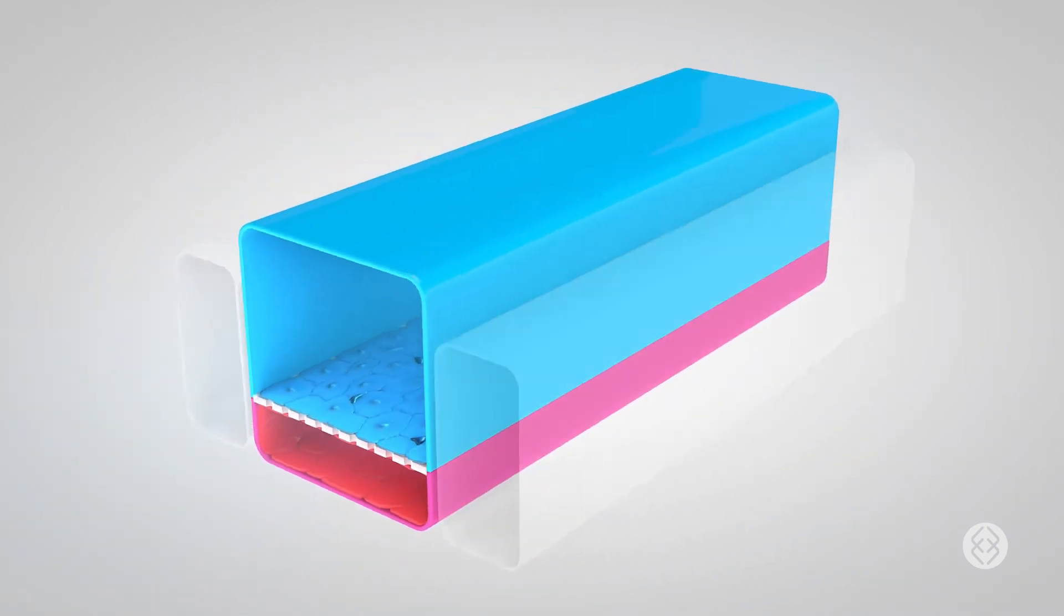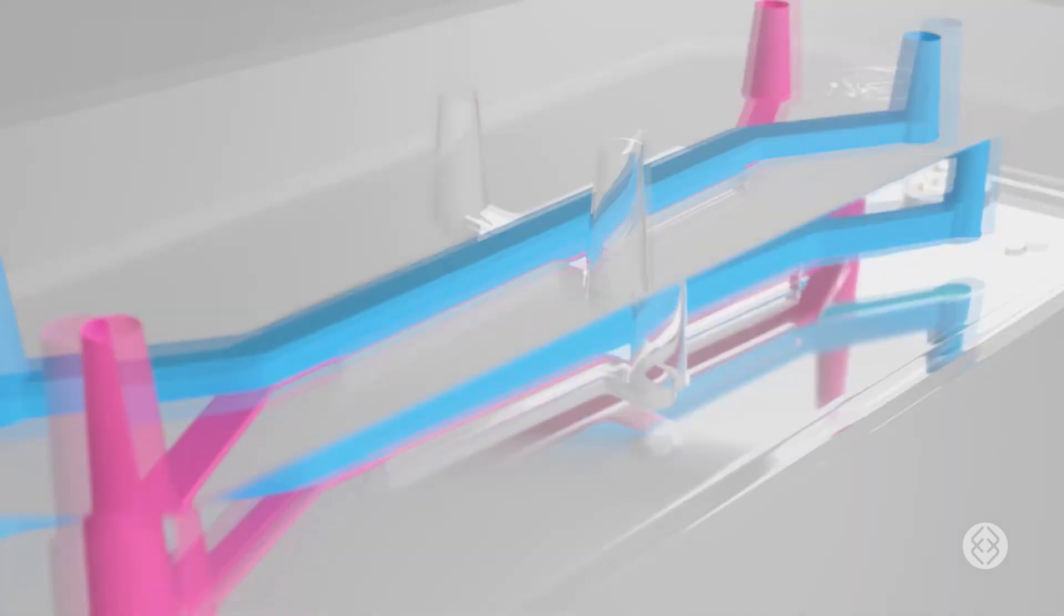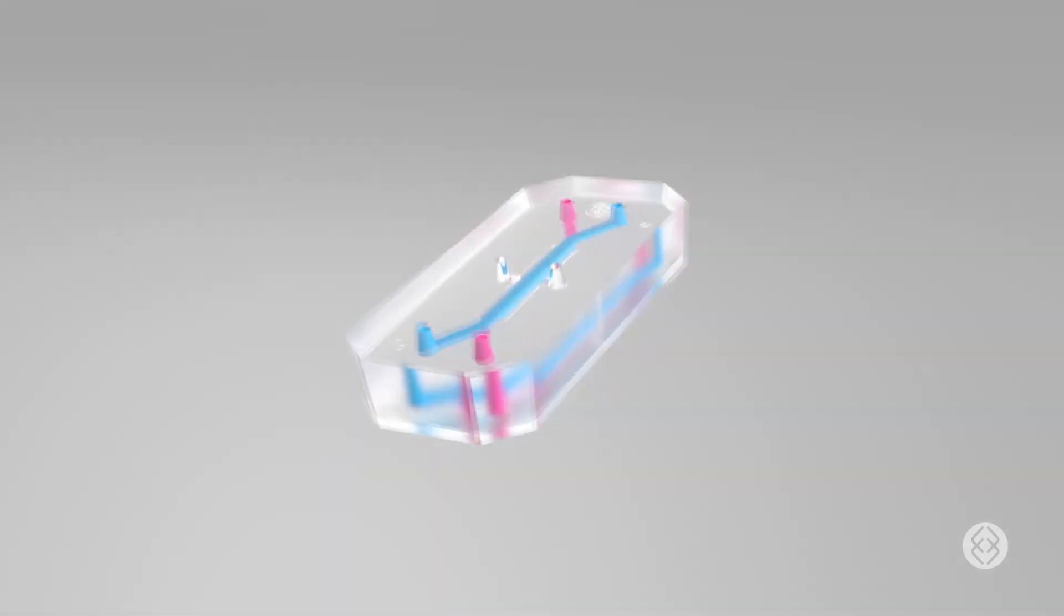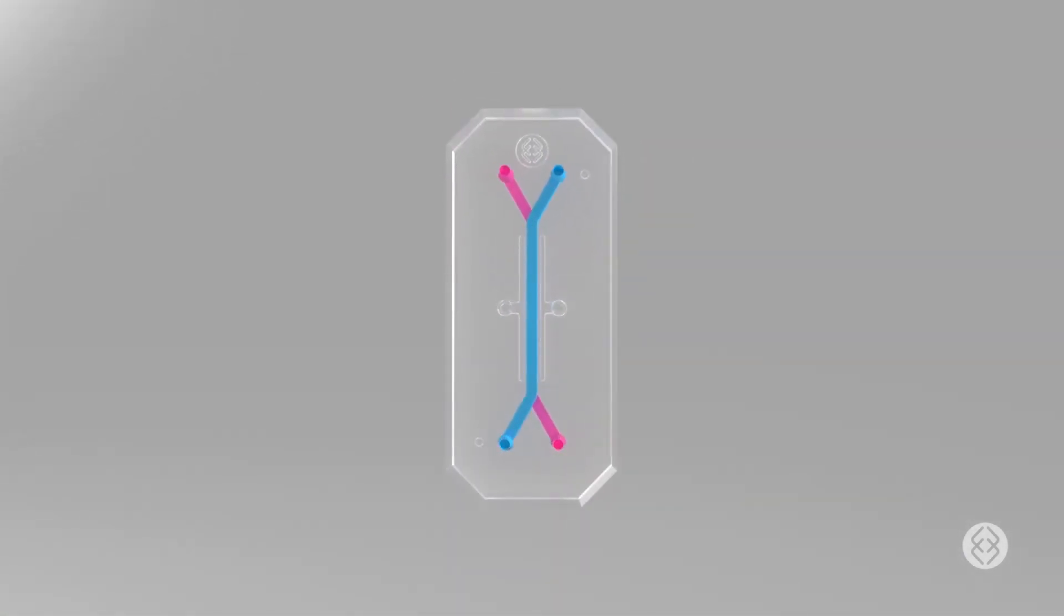The alveolus lung chip helps us predict how medicines, chemicals, and foods affect human health. It's one part of the human emulation system, which is allowing us to gain a deeper understanding of human biology.